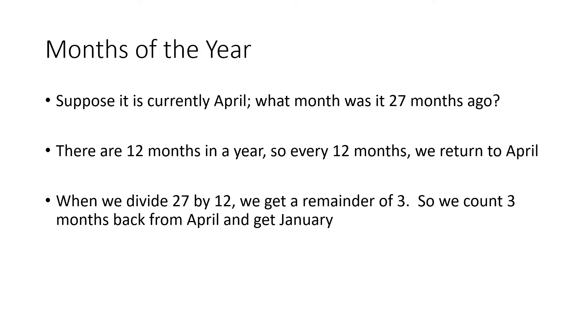We can do the same thing with months of the year. Let's say that it's currently April. What month was it 27 months ago? Well, there's 12 months in a year, so every 12 months we return to April. So again, we're going to think about this using remainders. When we do 27 divided by 12, same basic process that we just did on the calculator, we're going to get a remainder of 3. So this time we want to know ago, so we're going backwards. So we think April, then we go backwards March, February, and January. So if we go backwards 3 months using that remainder, we know that 27 months ago it was January.